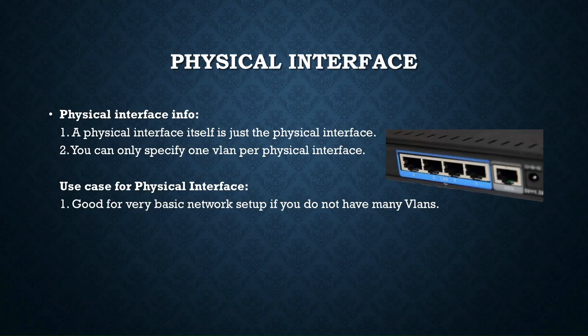So what is a physical interface? Well, as you can see, it is just a physical interface that you can see on your router or firewall. It's a physical interface that you can plug cables and such into. And usually — I have never come across this — you could specify more than one VLAN per physical interface.